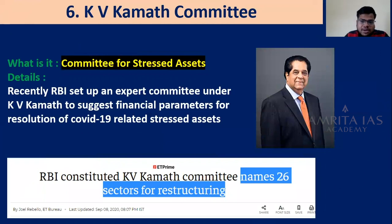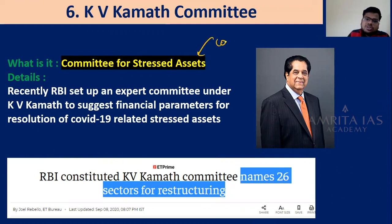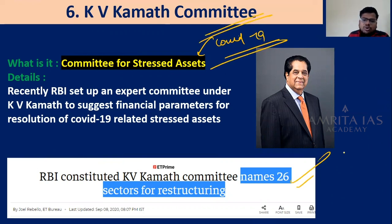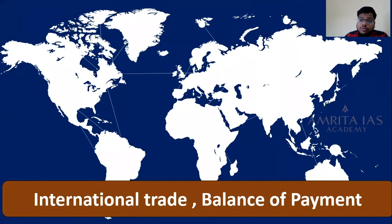The last topic in the banking/finance section is the KV Kamath Committee. This committee was set up to deal with stressed assets, especially those arising from COVID-19. It identified around 26 sectors for restructuring. The key point to remember is that the KV Kamath Committee was set up to recommend resolution frameworks for COVID-19 related stressed assets.